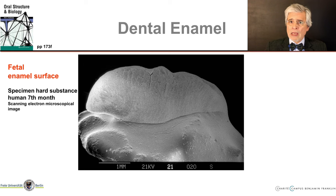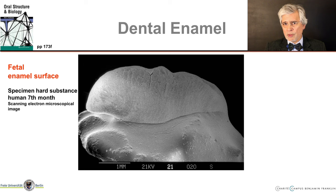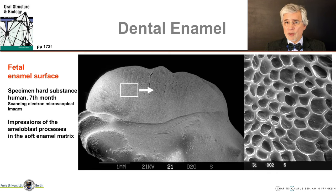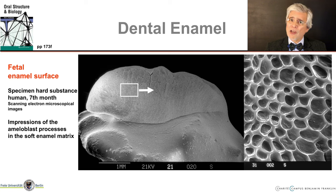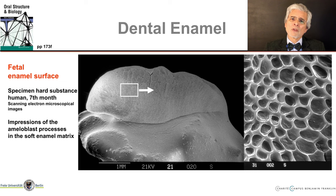Here we will first have a closer look at the fetal enamel surface. I had a part of the tooth from the seventh month under the scanning electron microscope, showing enamel formation — the tooth bell with the ameloblast has been removed and we are looking directly at the fetal enamel surface just formed in the seventh month prenatally. This is a deciduous incisor in the lower jaw. We can see the impressions on the surface caused by the ameloblasts in the enamel structure, which was still somewhat soft at that time. They all show different outlines — some hexagonal, others like a pentagon, and there are others which resemble a keyhole form, and also oval or roundish shapes.